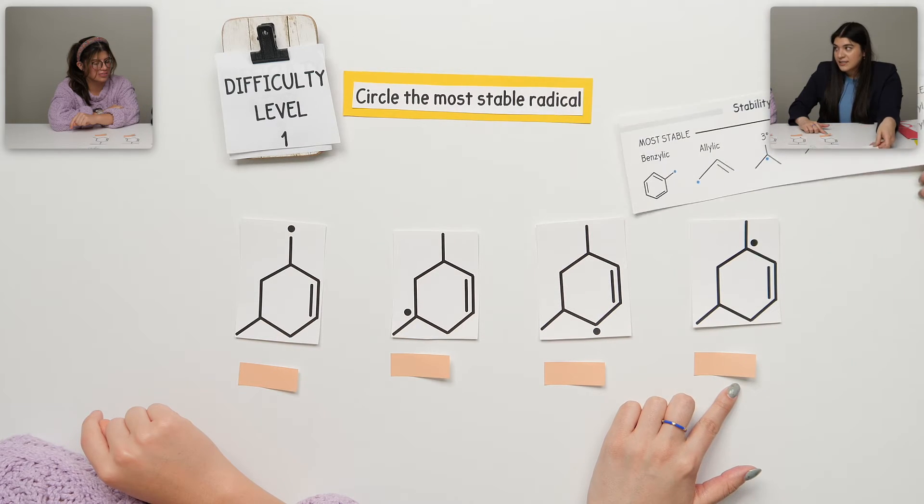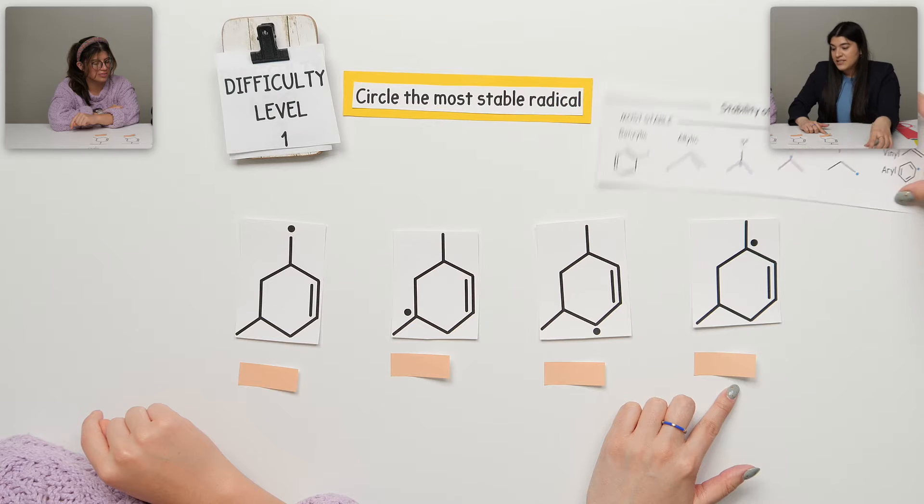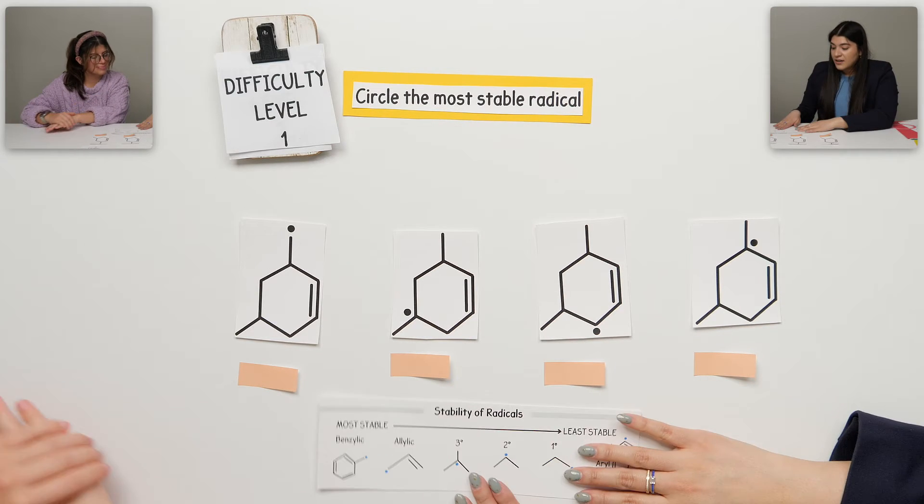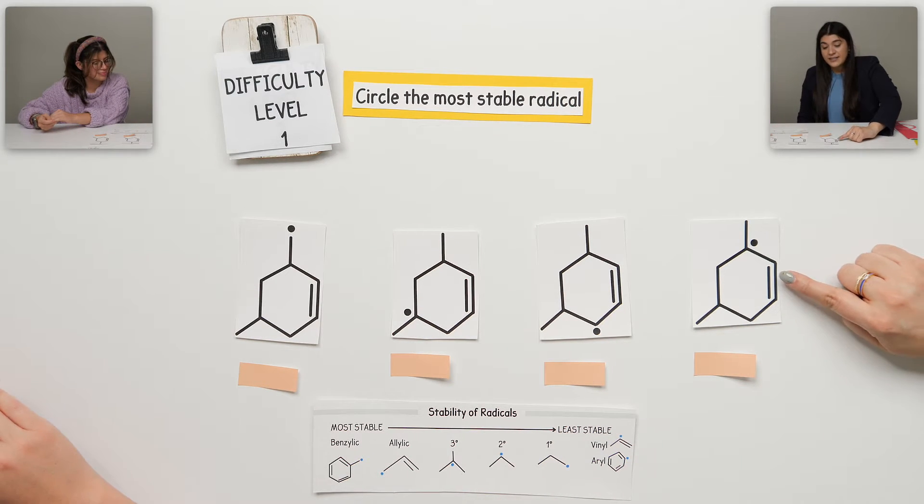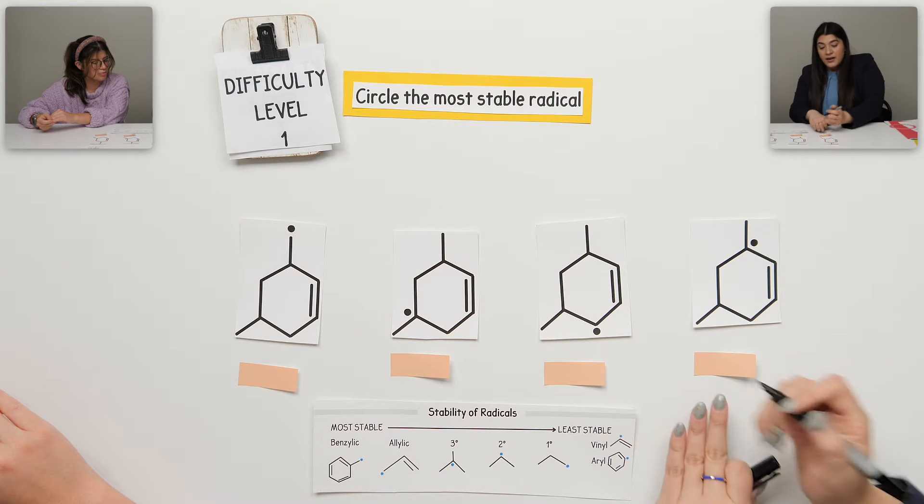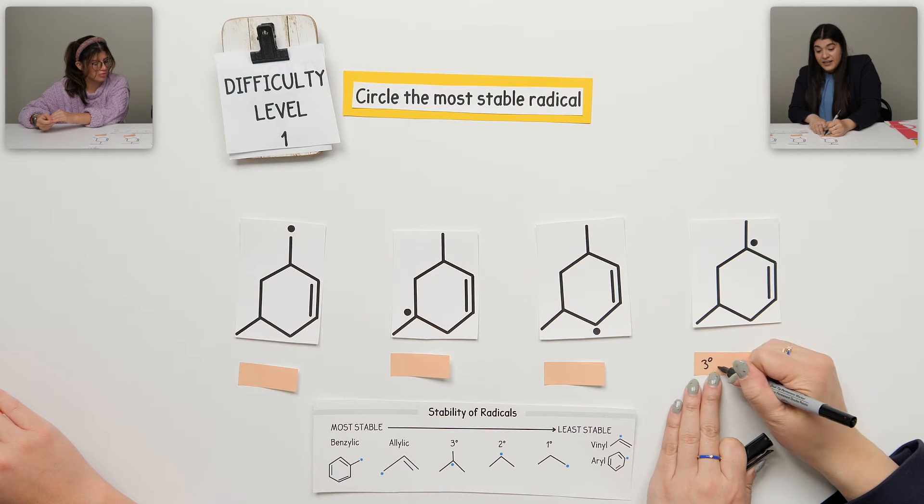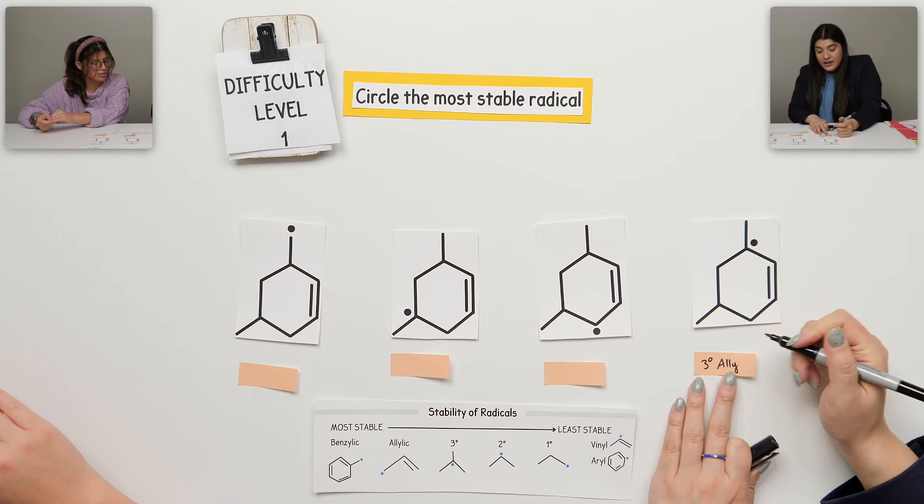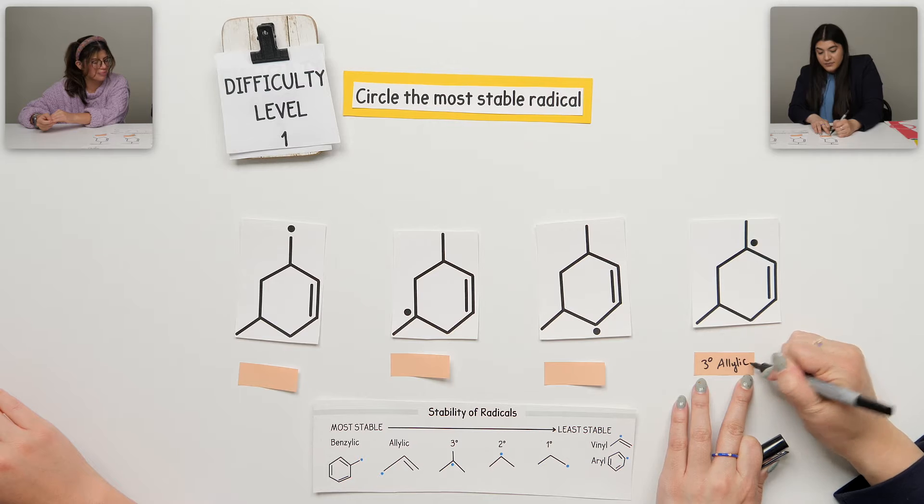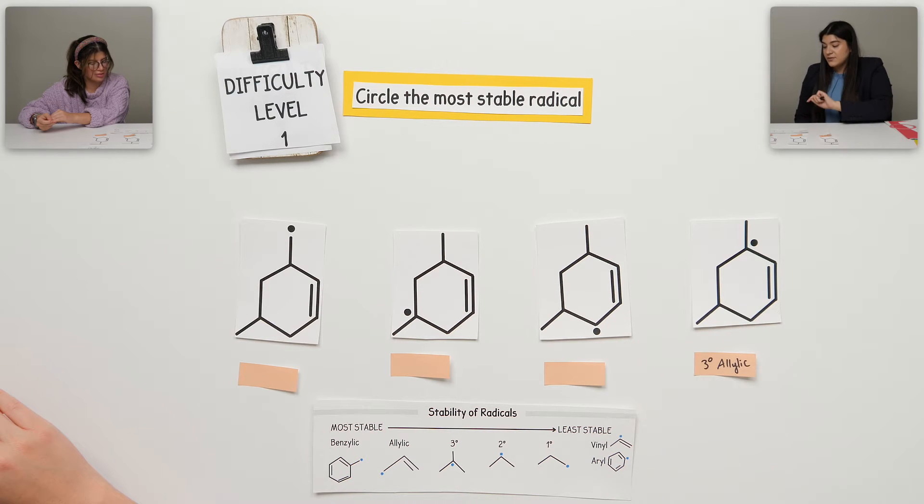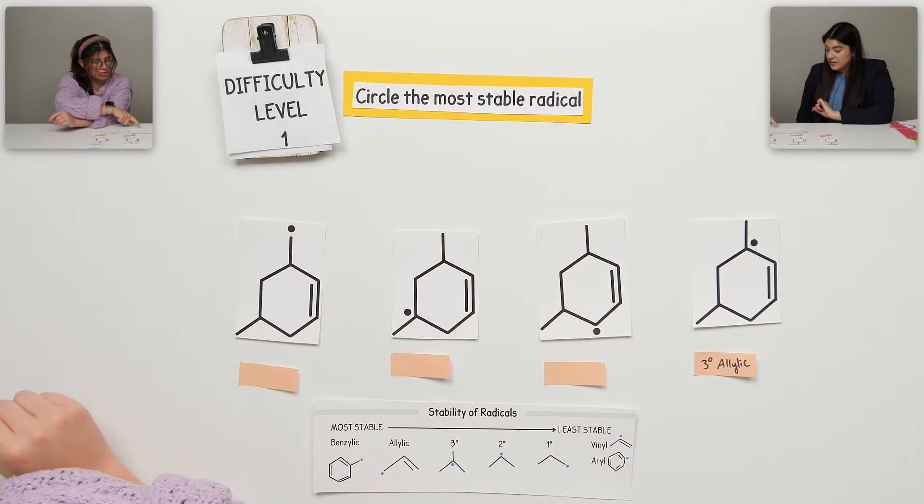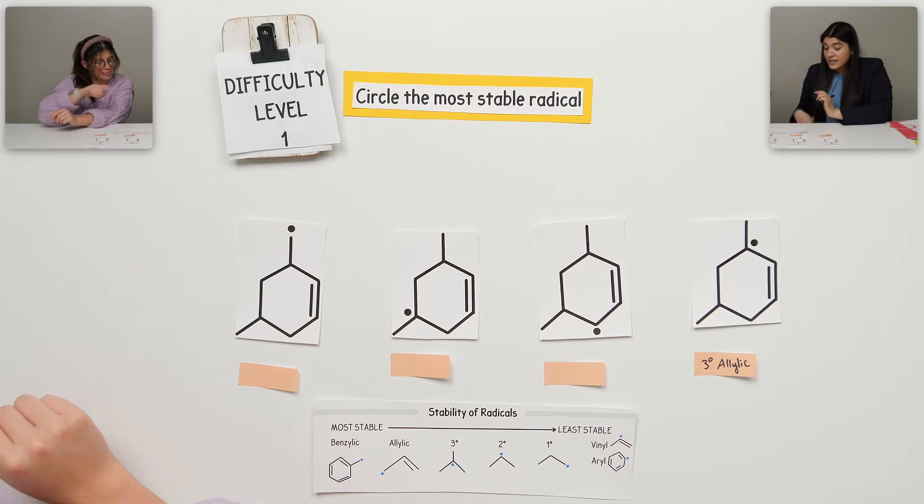And of course, it also depends on how substituted this is. Is it tertiary, secondary, primary, and so on? So in this case, you said, considering these stability rules, I know that this guy here is allylic and it's tertiary. So I'm going to just label that. I'm just going to say that it's tertiary and allylic.